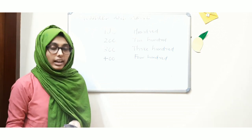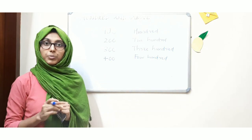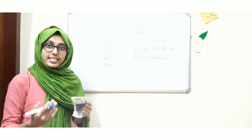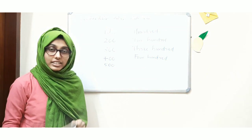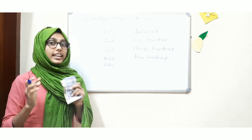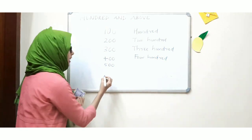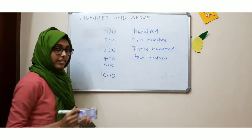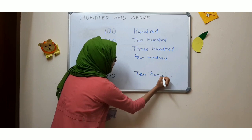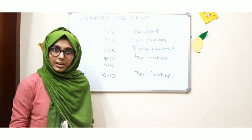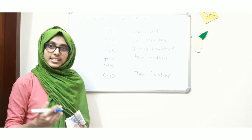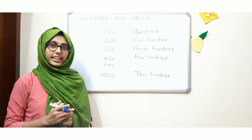So now again one more 100 — that will become 500. Like that: 600, 700, 800, 900. And 10 hundreds. If I have 10 hundred rupee notes, I will write ten hundred. So 100, 200, 300, 400, 500, 600, 700, 800, 900, and 10 hundred.